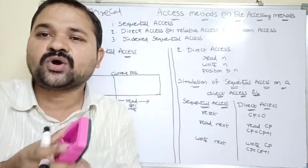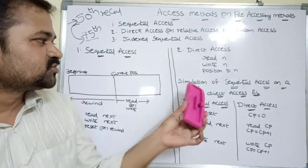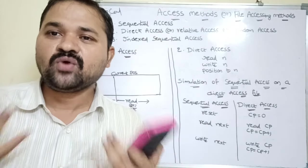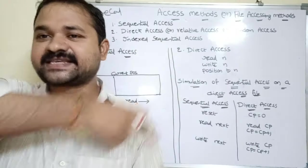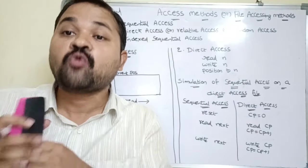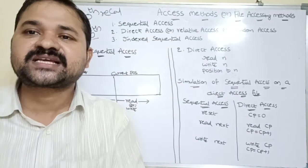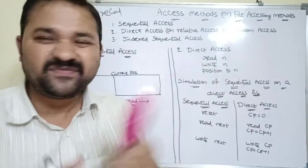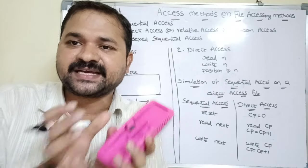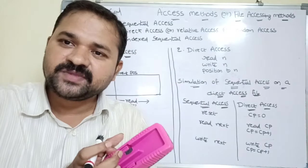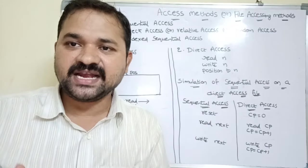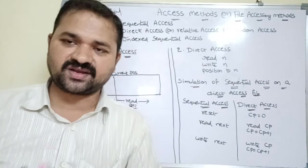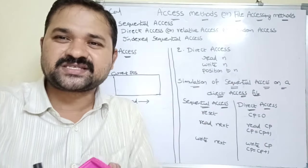We can access the record randomly without worrying about the order. The best example for direct access is a hard disk or magnetic disk, which is organized into a collection of blocks where the blocks contain the files. Another good example: if a CD contains 10 songs and we are listening to the 3rd song, we can directly move to the 7th, 9th, or 10th song. Magnetic disks such as CDs and hard disks are the best examples for direct access.